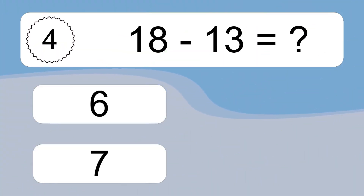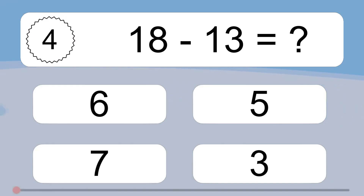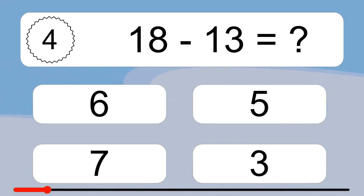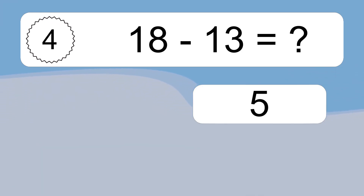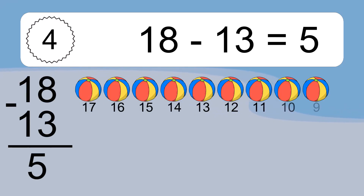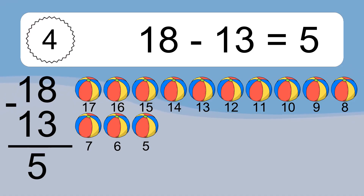18 minus 13 equals what? 18 minus 13 equals 5. Let's count it! 18, 17, 16, 15, 14, 13, 12, 11, 10, 9, 8, 7, 6, 5.